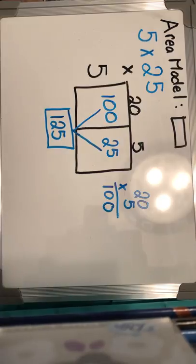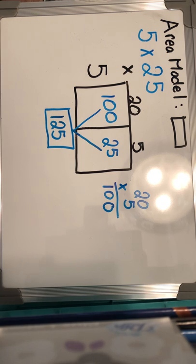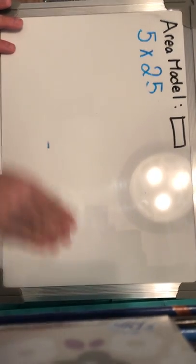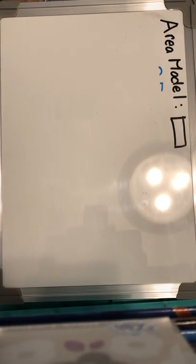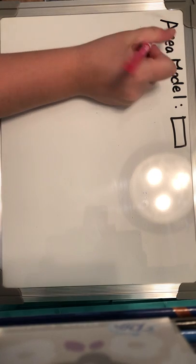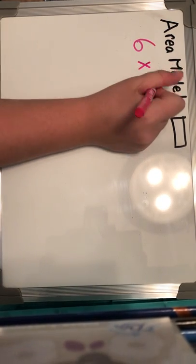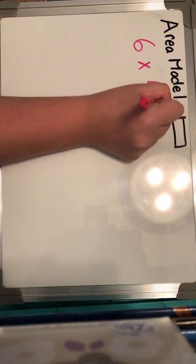Now this is double digit by single digit multiplication. Remember, we can go into the hundreds and the thousands place to do area model, and we're going to go into our window method by double digit by double digit. So I'm going to erase now and I'm going to try a new problem. Let's do six times 472.